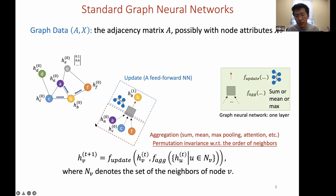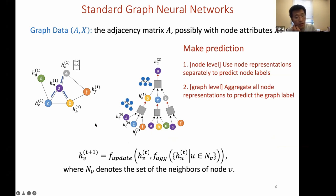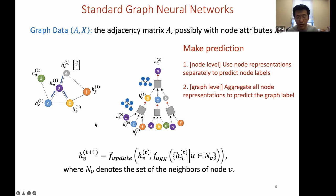Standard GNNs gradually update node representations by aggregating and combining representations from neighbors. The aggregation procedure typically corresponds to a set pooling function such as sum, mean, or max pooling. The key property of aggregation is permutation invariance with respect to the ordering of neighbors. The update operation combines aggregated features with a node's own features, typically implemented with a simple feedforward network.